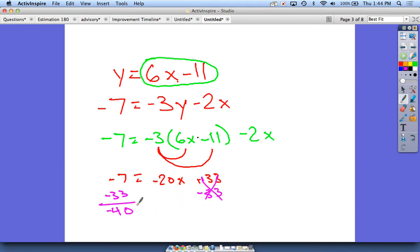That would cancel out, equals negative 20x. So now I should be able to solve for x. I take a look at this: negative 20 times 2 is negative 40, so my x is just going to be 2.